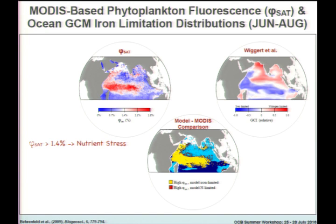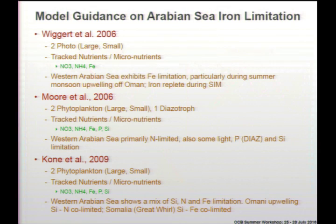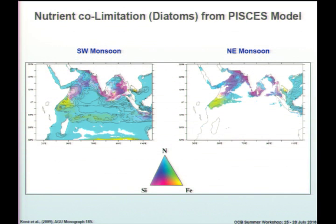An interesting thing in that same Berenfeld 2009 paper: looking at the global map with global model output, they pick up nicely what's going on in the Pacific. In the Indian Ocean and in the satellite-based map, there's still a nutrient stress indicator. But there's no indication of nutrient stress being an issue in the other model — so the models are not agreeing with each other.